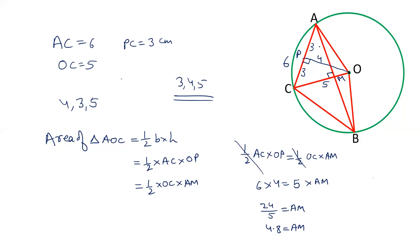Now if AM is 4.8, BM, because this is perpendicular from the center, so it will bisect the chord. BM will also be 4.8. AM and BM are equal to 4.8. And therefore AB is equal to twice of AM, 2 into 4.8, that is 9.6 centimeter. Length of AB is 9.6 centimeter.